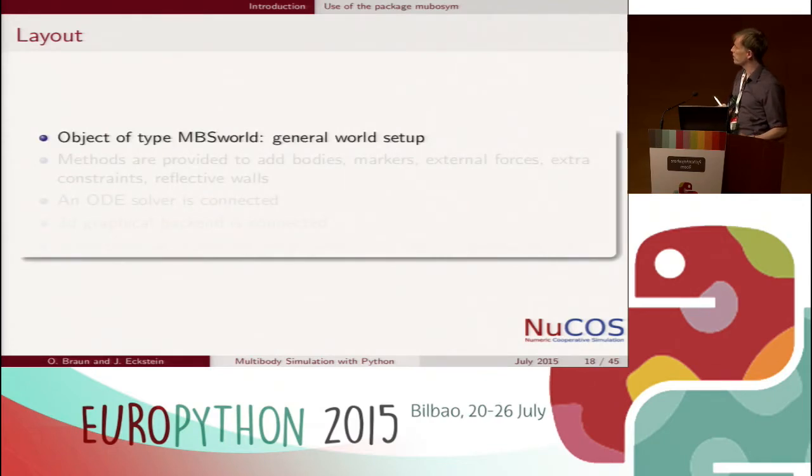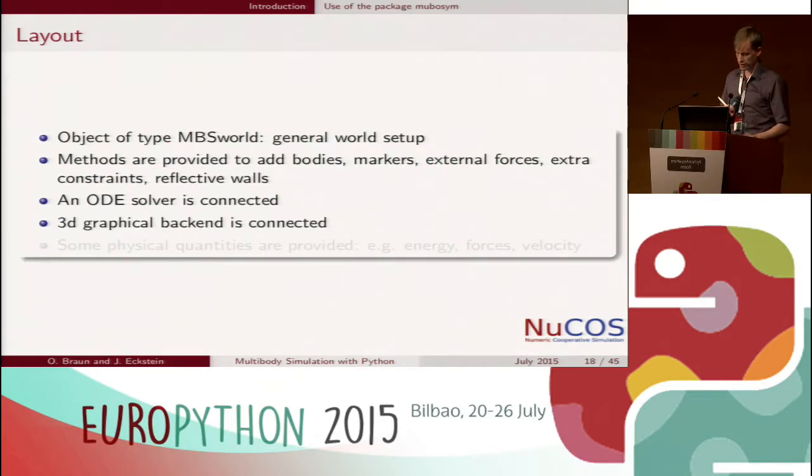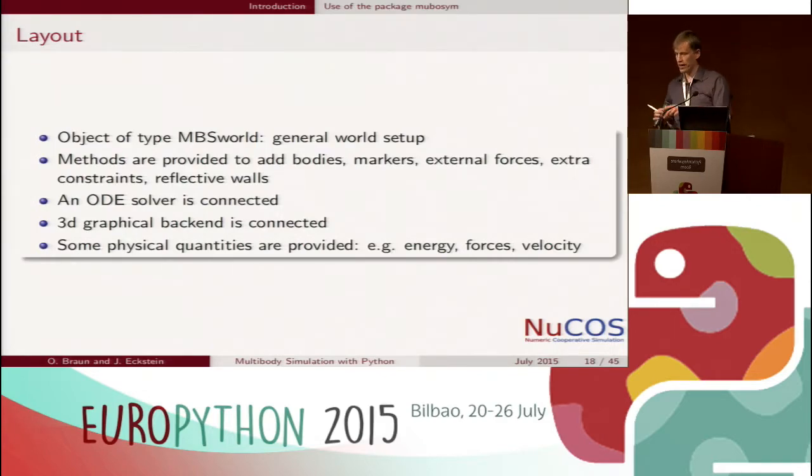I will show you how it is used. If you are a user, you just need to have an object which set up your world, just give you a world coordinate system and a marker. A marker is always a coordinate system in the language of multi-body simulation. There are methods provided to add bodies and markers, so extra coordinate systems, external forces, extra constraints, and for example, reflective walls. An ODE solver is connected more or less automatically. A 3D graphical backend is connected automatically. So each body signs up in the graphical backend and appears somehow as you want it to be appeared. I will show you examples later on.